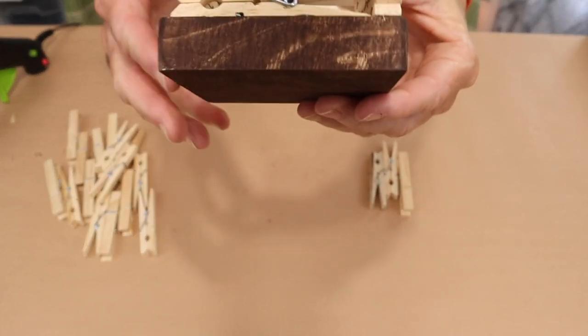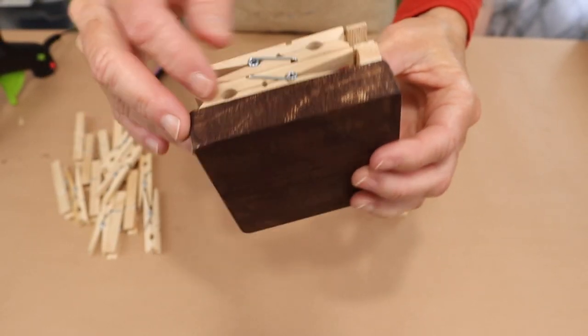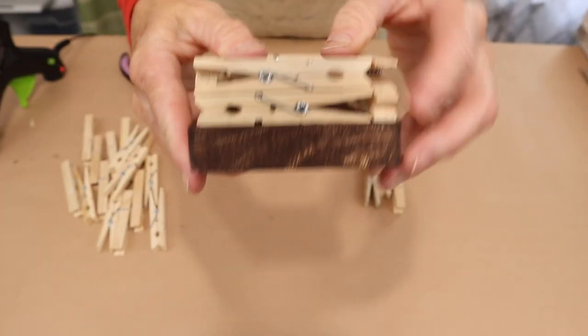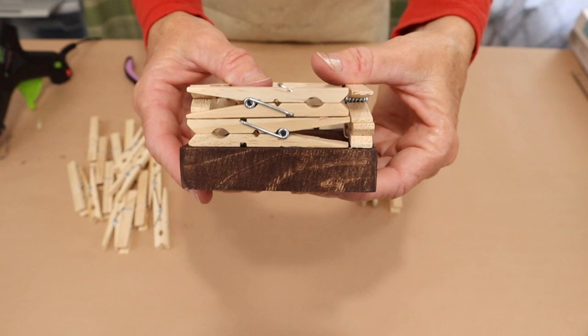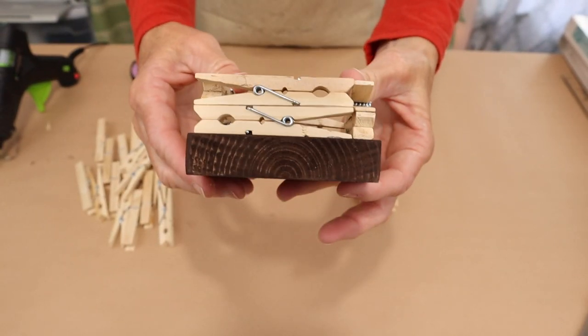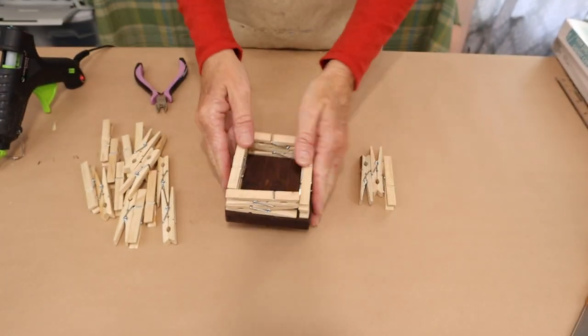So then, as you'll see, you'll alternate each row as you do it. There's a little bit of extra glue on there. But anyways, you'll alternate each row, like pinchy end, pinchy end. So you'll just alternate as you go up around the thing.